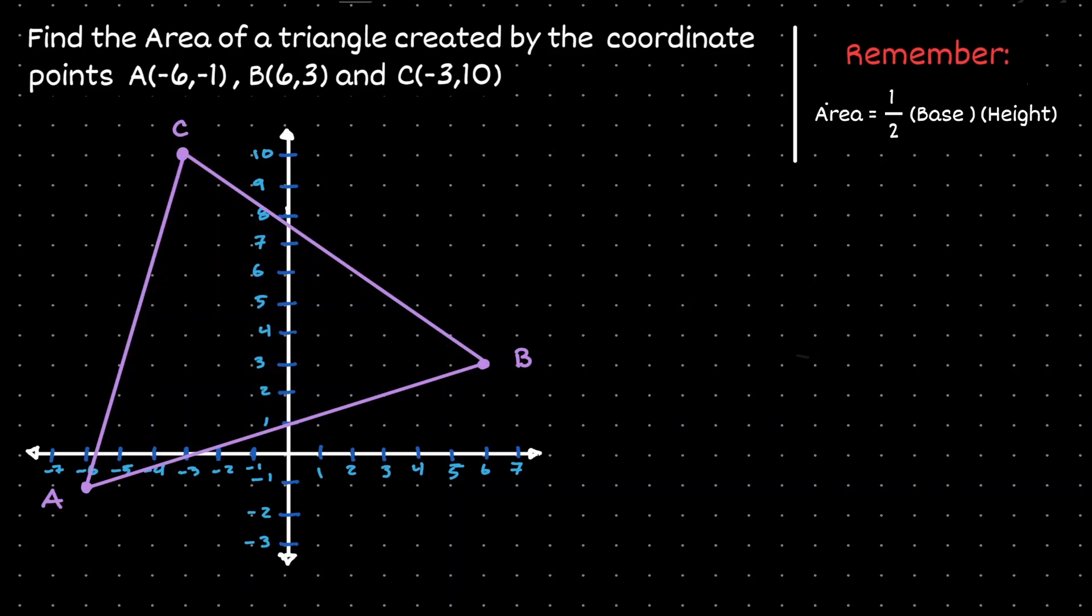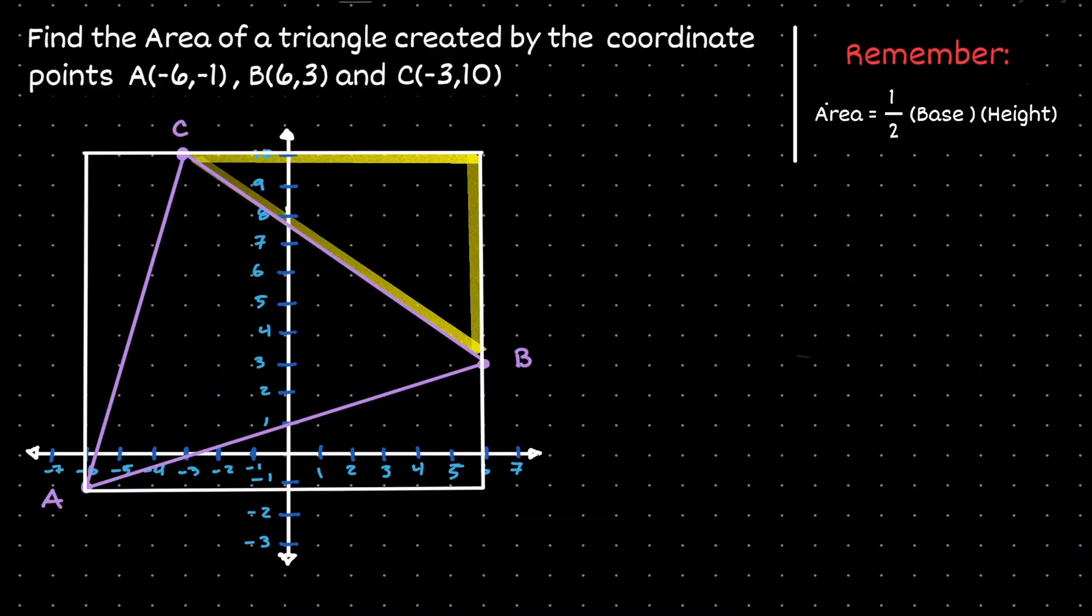We're going to enclose this triangle inside of a rectangle. When we place our figure inside of a rectangle, notice that we have created different right triangles: the one on the left, the one on the right, and the one on the bottom.